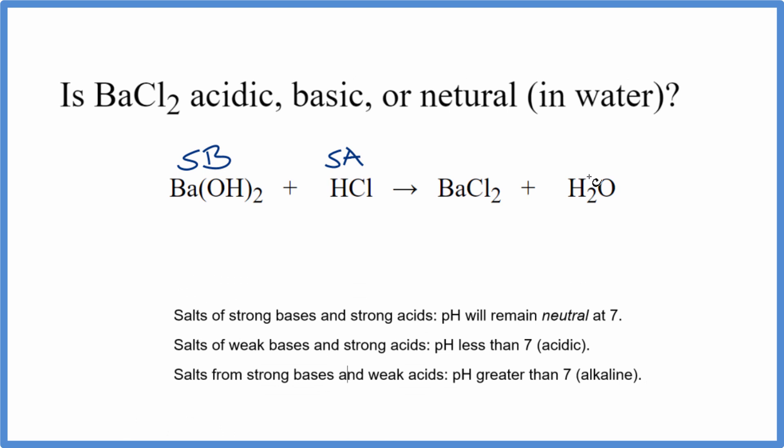So now that we know the strength of each of these substances, we can use the rules. So we have a strong base and a strong acid. Here's our strong base, the barium hydroxide, hydrochloric acid, a strong acid. If we have strong bases and we react those, we neutralize them with strong acids, the pH is going to be neutral at seven.